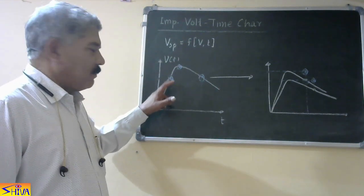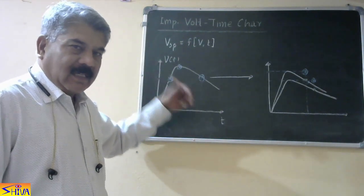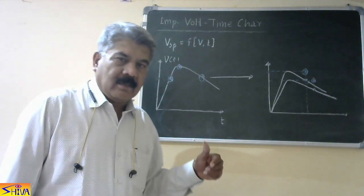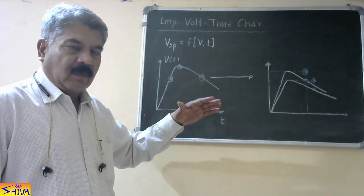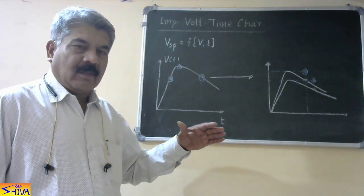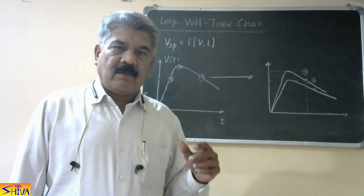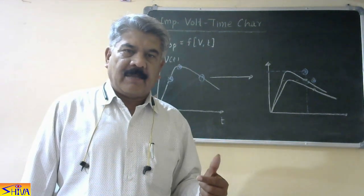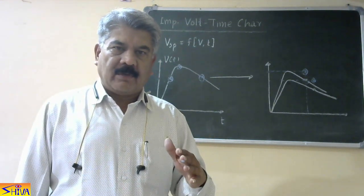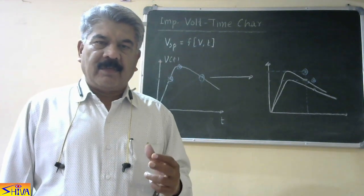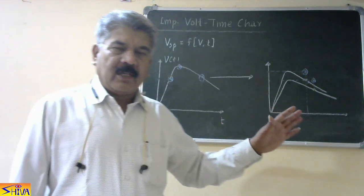Remember: if spark over takes place at the rising portion, in the next consecutive attempt we reduce the amplitude of the impulse wave so that the insulation sustains the voltage for a comparatively longer time. Then we find the point. Again we apply the voltage but with reduced magnitude so that the time for which it can sustain the voltage is different. Finally, we join all these points by a smooth curve.